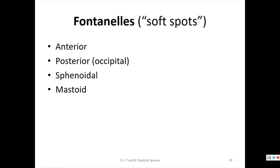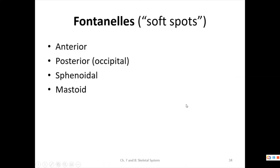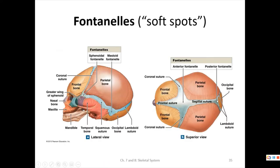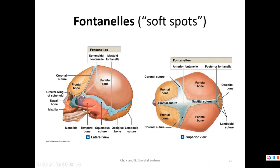I may ask a multiple choice question about which structure is or is not a paranasal sinus. The fontanelles are the soft spots on the infant skull — the anterior, posterior, sphenoidal, and mastoidal fontanelles. The anterior is the main large soft spot that allows the skull to grow; the posterior is at the back; the sphenoidal and mastoidal are on the sides.